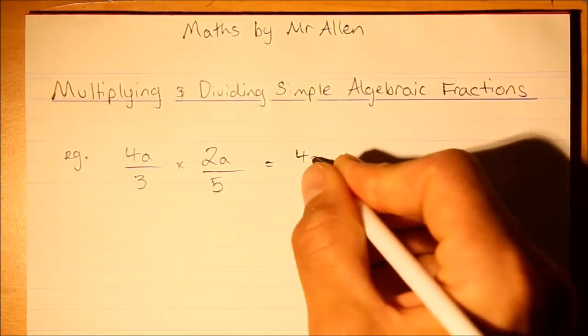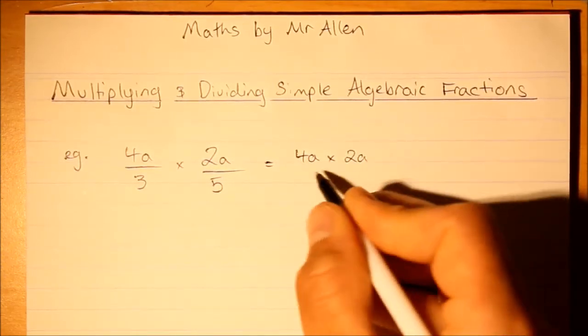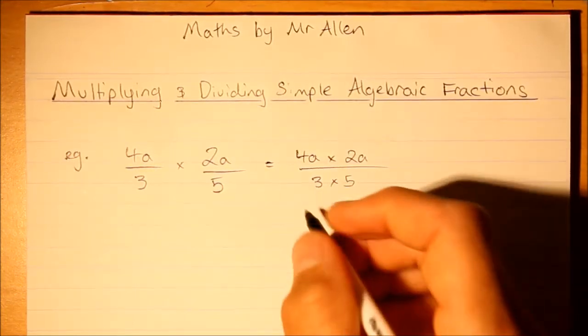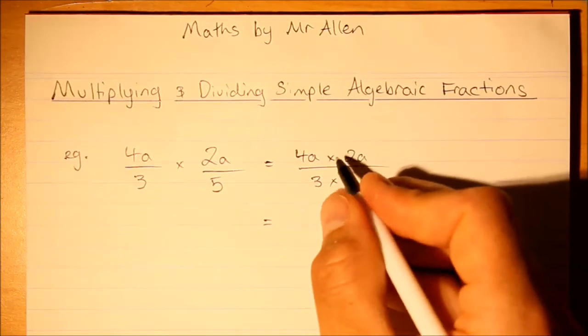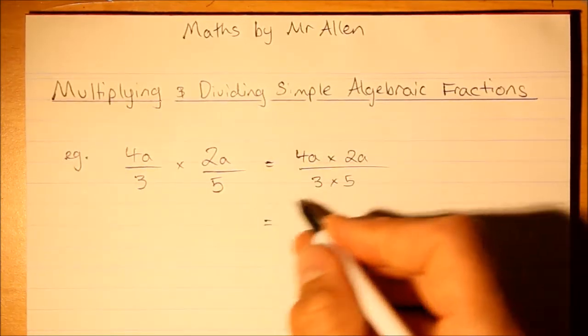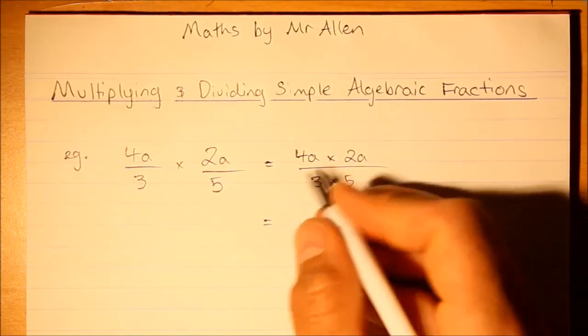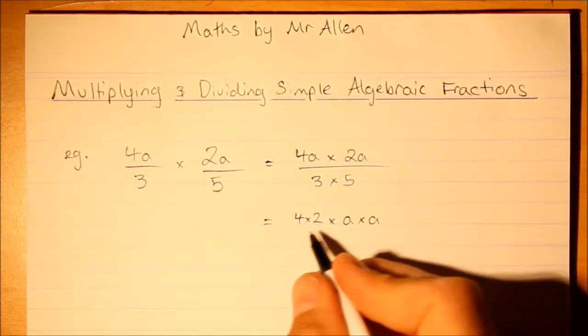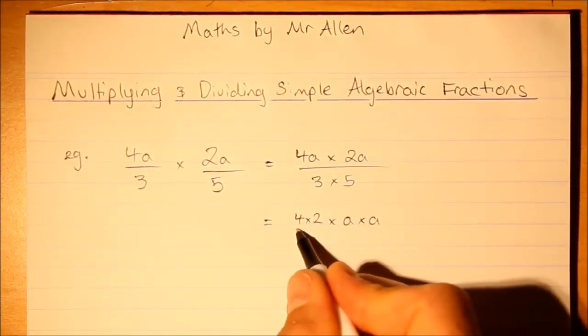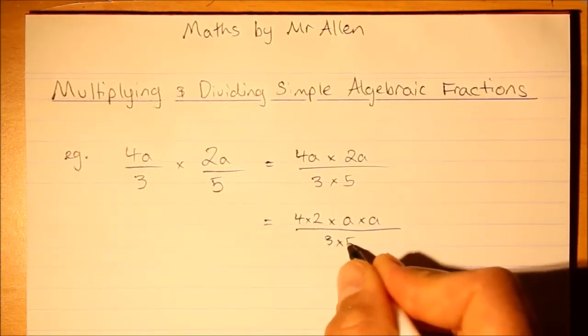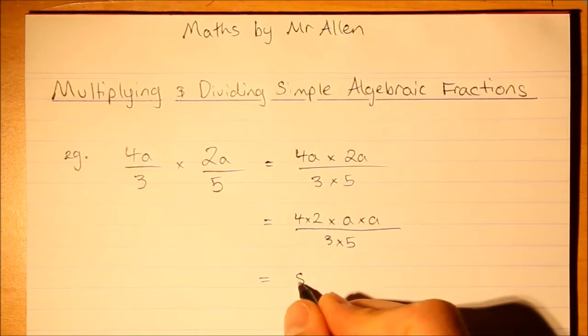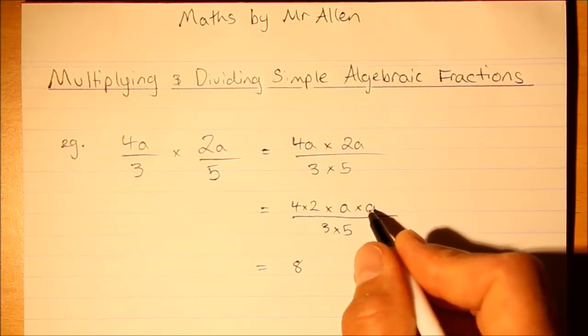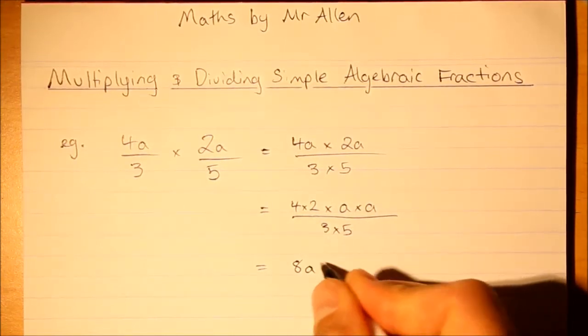So I'll write it out like this: 4a times 2a and 3 times 5. Now we can, I'll just write it out an extra step, you'll get quicker at this. 4 times 2 times a times a, multiplying the numbers together. I'll just rewrite that so we get 8, and a by a, a times a is a squared, so rewrite that and all over 15.